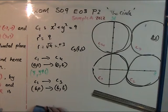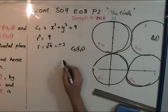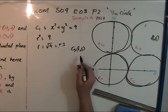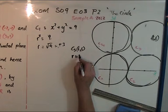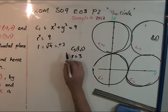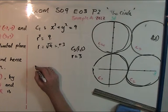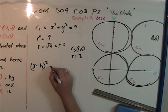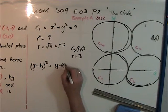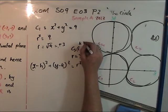Now to write down the equation of C3. The radius equals 3, which we got before. I put this into my formula: (x - h)² + (y - k)² = r², where (h,k) is the new center.